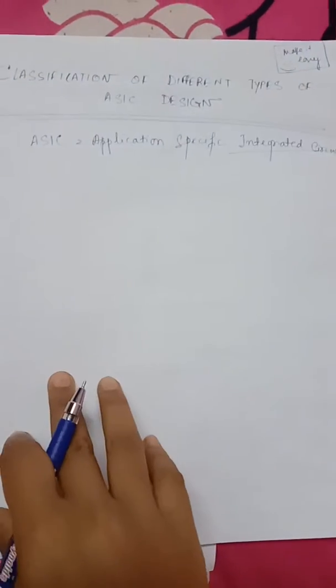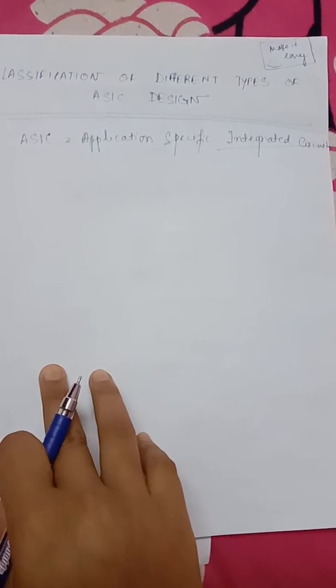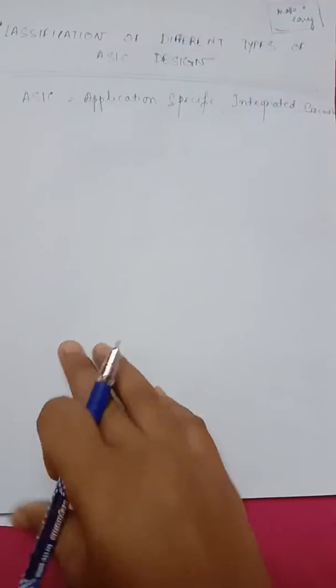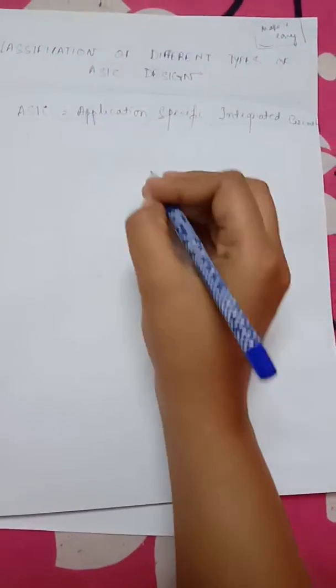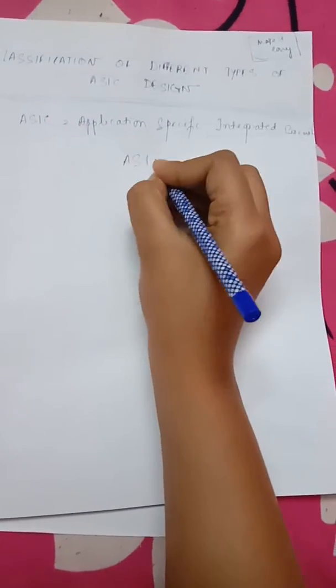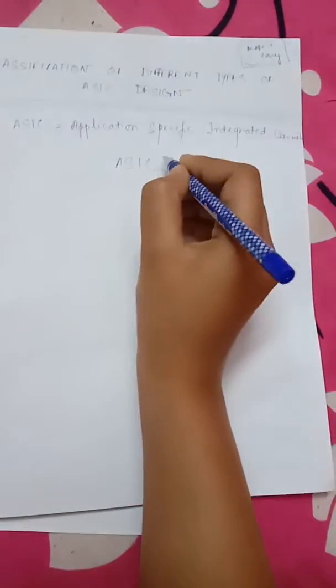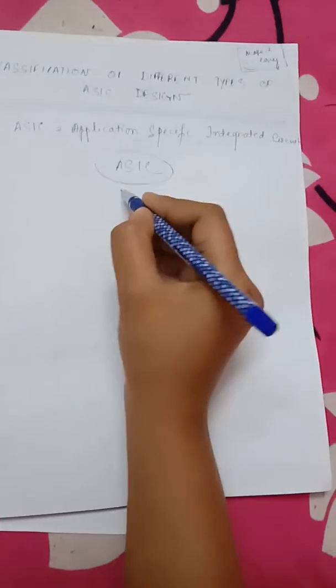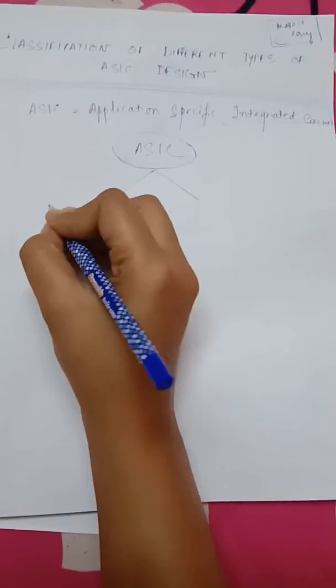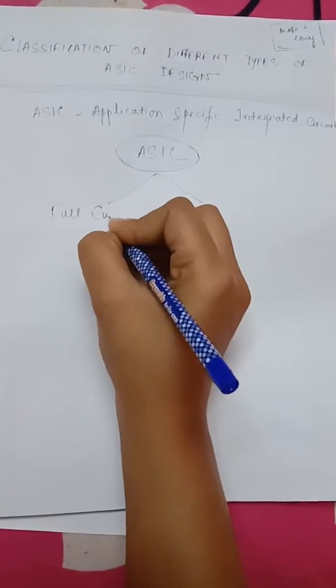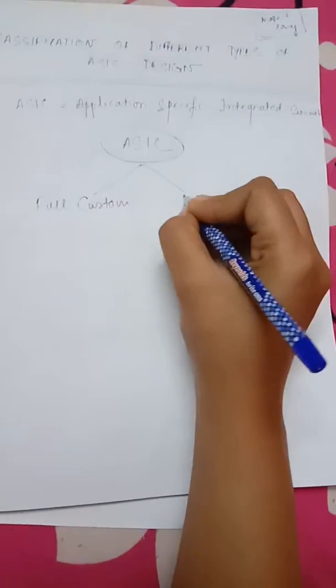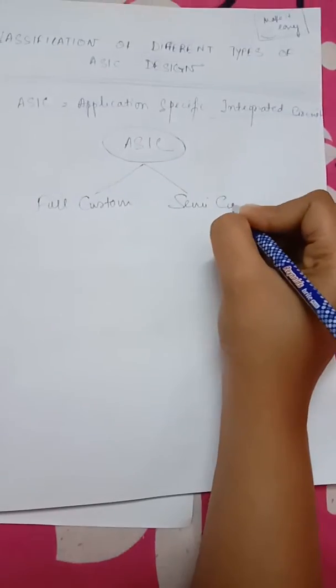In this lecture, we will learn about the classification of different kinds of Application Specific Integrated Circuits. Let's start. ASIC is firstly categorized into two parts: one is Full Custom, another one is Semi-Custom.